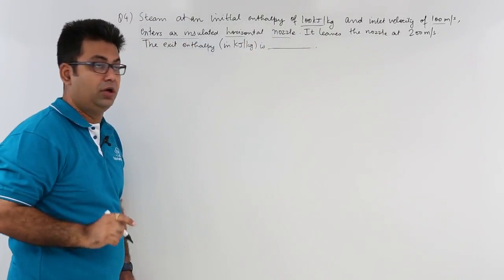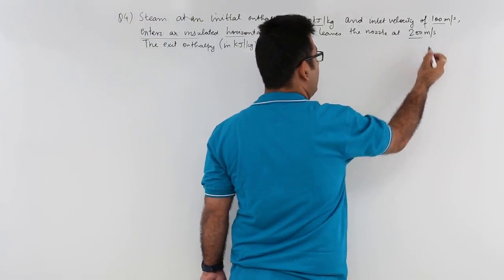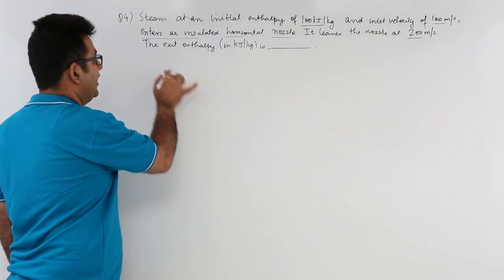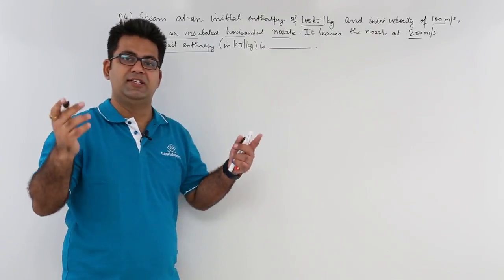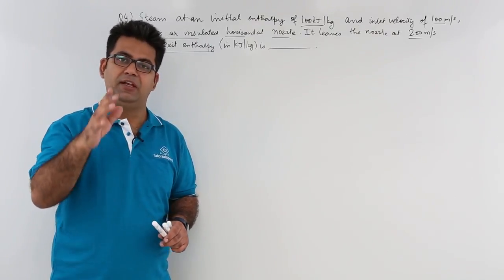So this is a question on a nozzle. It leaves the nozzle at 200 meter per second. The exit enthalpy is how much? So this is a straightforward question on steady flow energy equation from the first law.